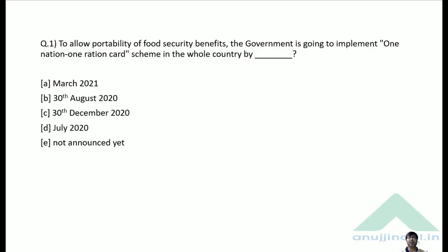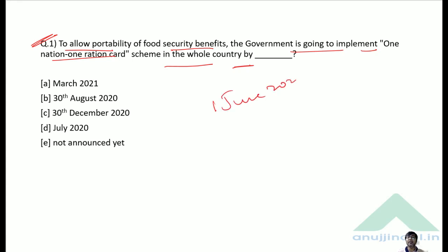Question 1: To allow portability of food security benefits, the government is going to implement One Nation One Ration Card scheme in the whole country by when? The initial date was June 2020, but it has been extended to March 2021. Therefore, the correct answer is Option A — March 2021.